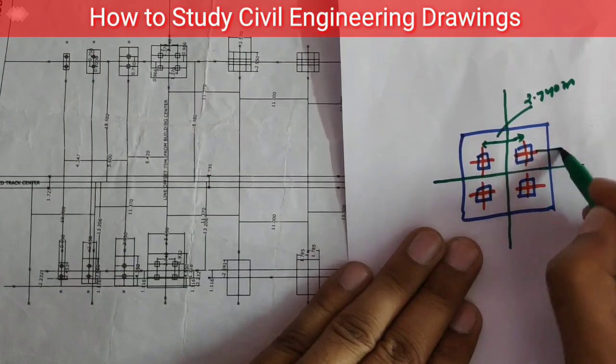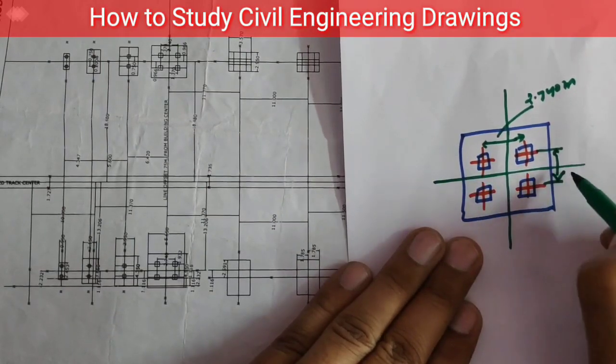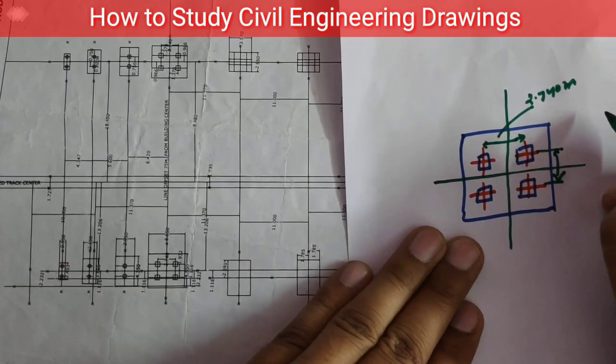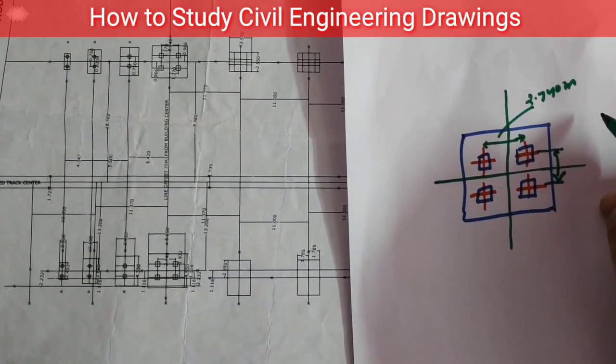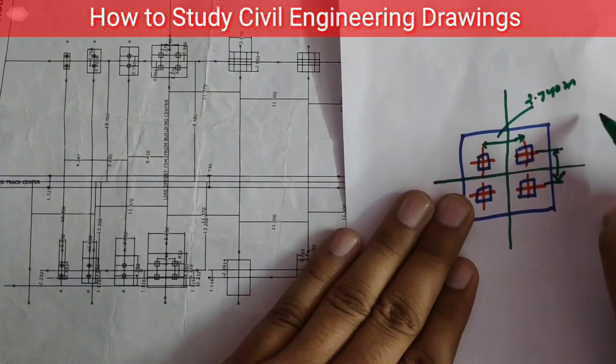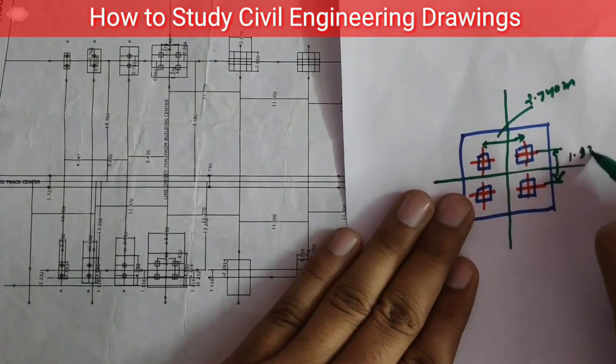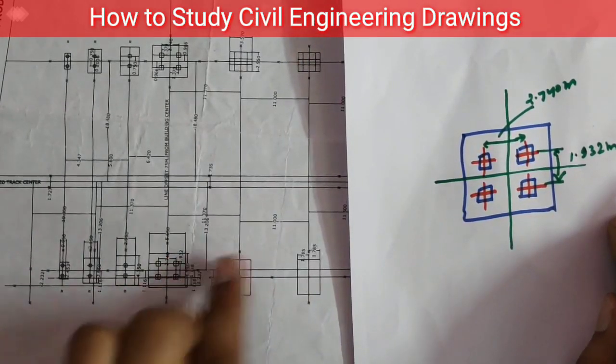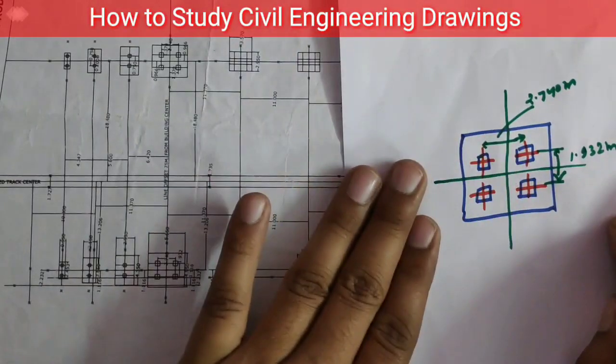From the center we extend this. This center-to-center distance is 1.932 meters. So you can see this is the outline of the footing, the same plan of the column.